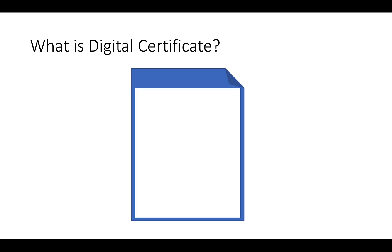A Digital Certificate is a document which has many fields of information related to the owner. For example, one field is version — X.509 is a standard format for public key certificates, and V3 is the current version. Another field is Serial Number, which is the unique ID of the certificate.